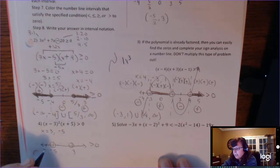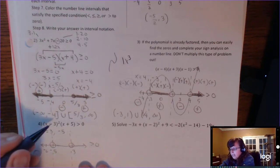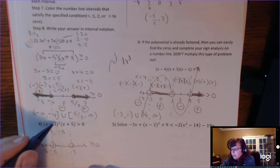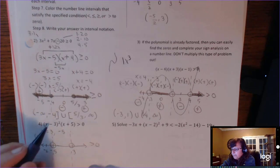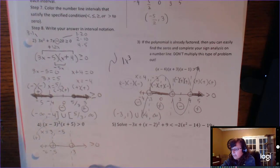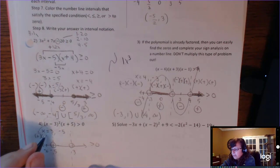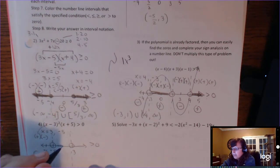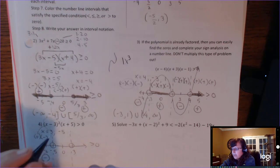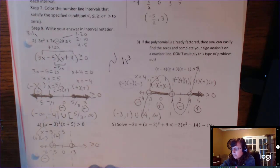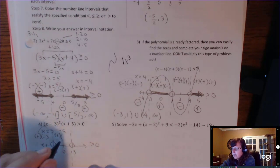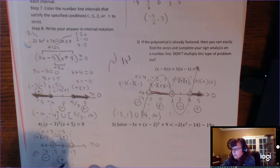Check the region left of −5 using −6: putting −6 into the squared factor gives −9, but squaring a negative makes it positive. The factor (x + 5) gives −6 + 5 = −1, a negative. So that region is negative. Trying 0 in the middle region: the squared factor gives −3, but squared becomes positive; and 0 + 5 = 5, also positive. So every number in that region is positive.